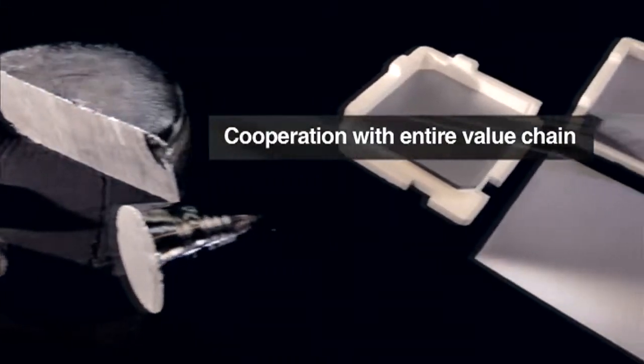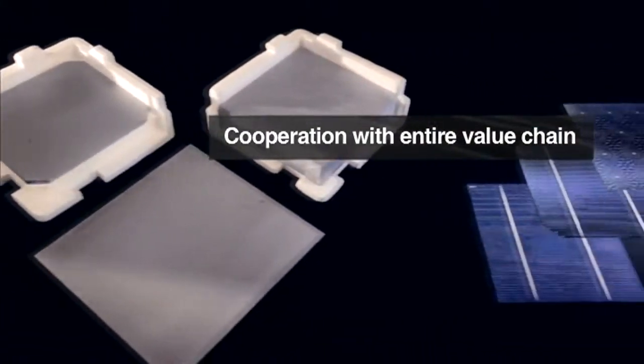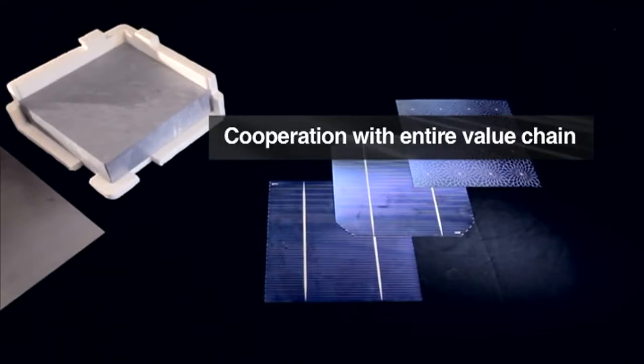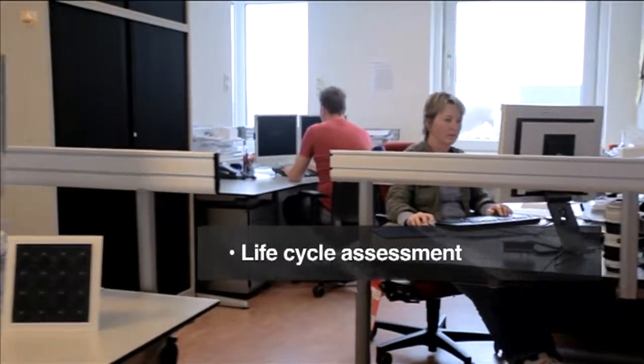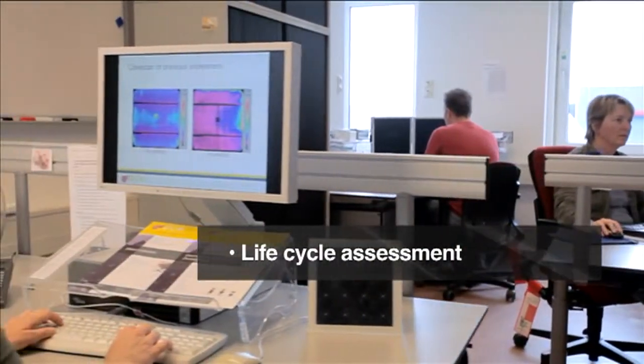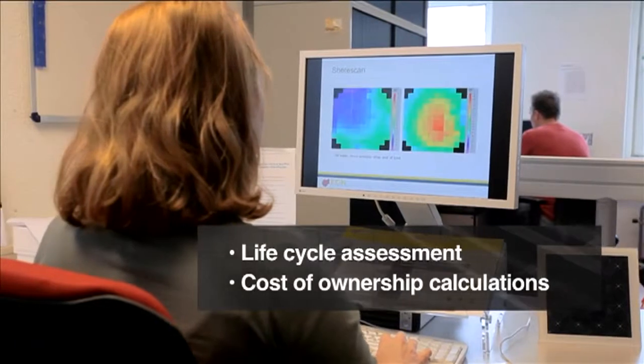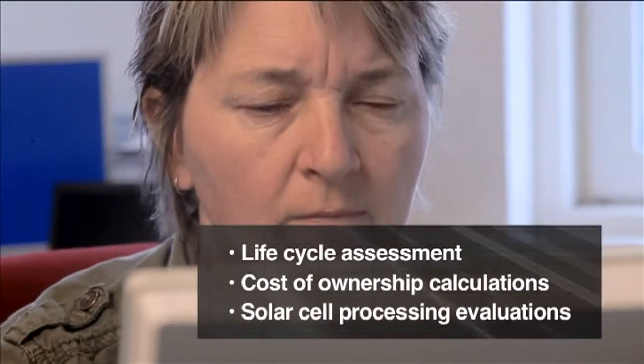ECN cooperates with the entire value chain, from polysilicon producers to module manufacturers. We are leading suppliers to the industry on topics such as life cycle assessment of PV technology, cost of ownership calculations, and solar cell processing evaluations.